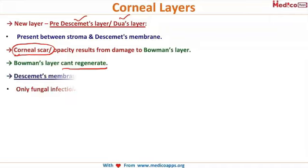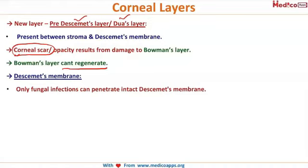Descemet's membrane is the strongest layer of all the corneal layers. It is not permeable to any infections, so Bowman's layer — being the strongest layer — does not allow anything to permeate inside the eye. However, the only infection strong enough to permeate even this membrane is fungal infection, so whenever there is Descemet's membrane involvement, you must immediately suspect a fungal infection of the cornea.